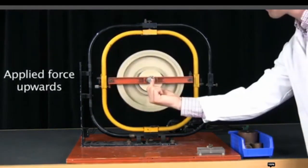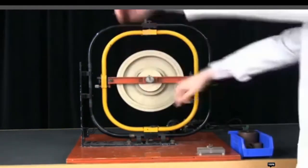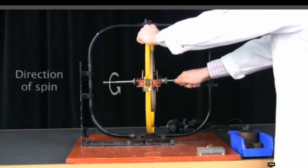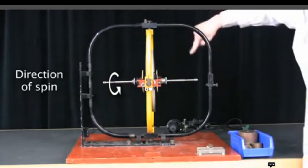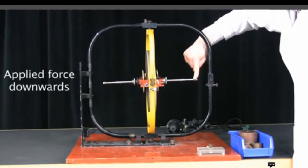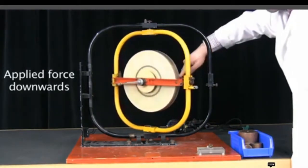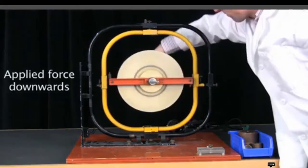Let us see what happens if the force applied on another direction. The direction of spin is same. And the person is applying force downwards. And the spin axis rotates clockwise or it precesses clockwise. This is called the precession.